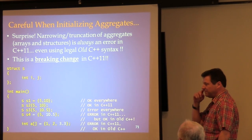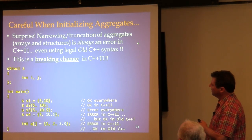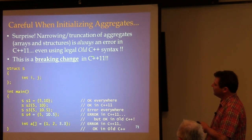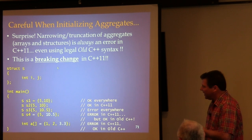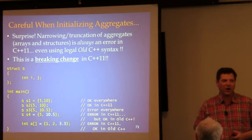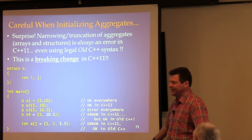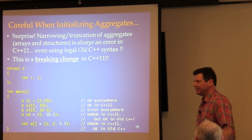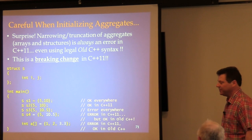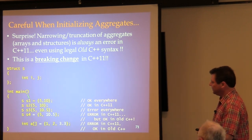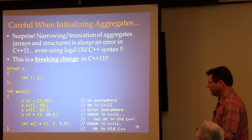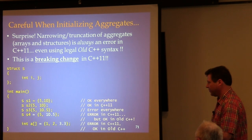Here's the fine print: narrowing and truncation of aggregates — arrays and structures — is always an error in C++11, even if it was legal in old C++. This is a breaking change: existing code that works will stop working and give you a compiler error. It's not a debugging nightmare — it's actually flagged clearly. Example: a struct with two ints initialized with floating-point values will cause a truncation error.